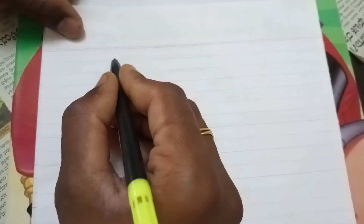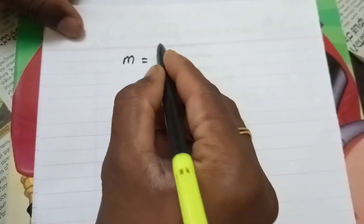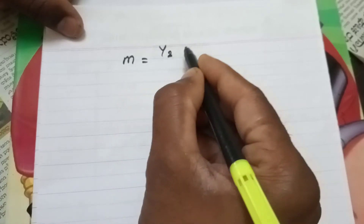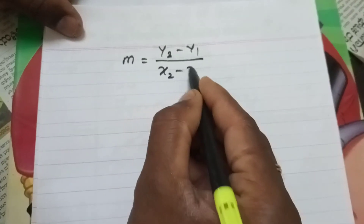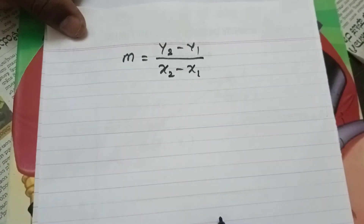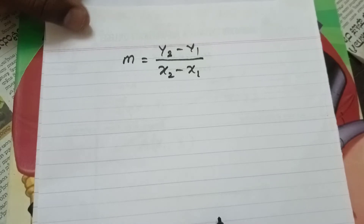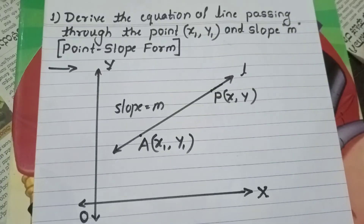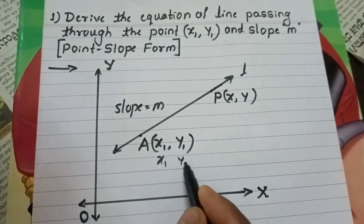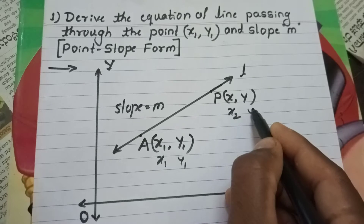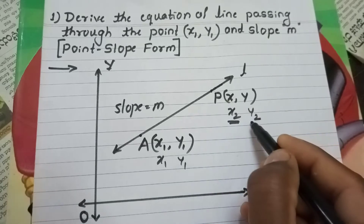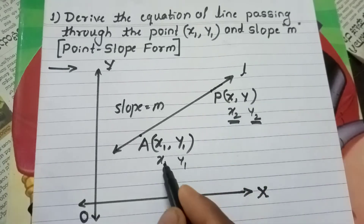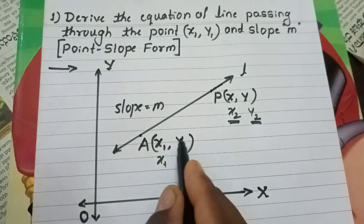Now apply the definition of slope with two points. So m is equal to y2 minus y1 divided by x2 minus x1. This is the definition of slope of a line passing through two points. Here, take the first value as (x1, y1) and the second value as (x2, y2). Here x2 value is x and y2 value is y, and x1 value is x1 and y1 value is y1.